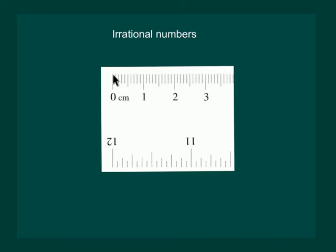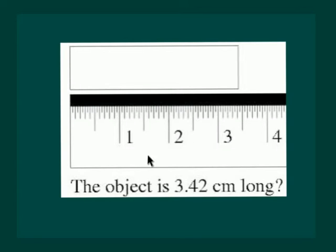More numbers left on the number line which we have not marked. Now look at this scale. This is also a centimeter scale in which we have divided each centimeter into 20 equal parts.